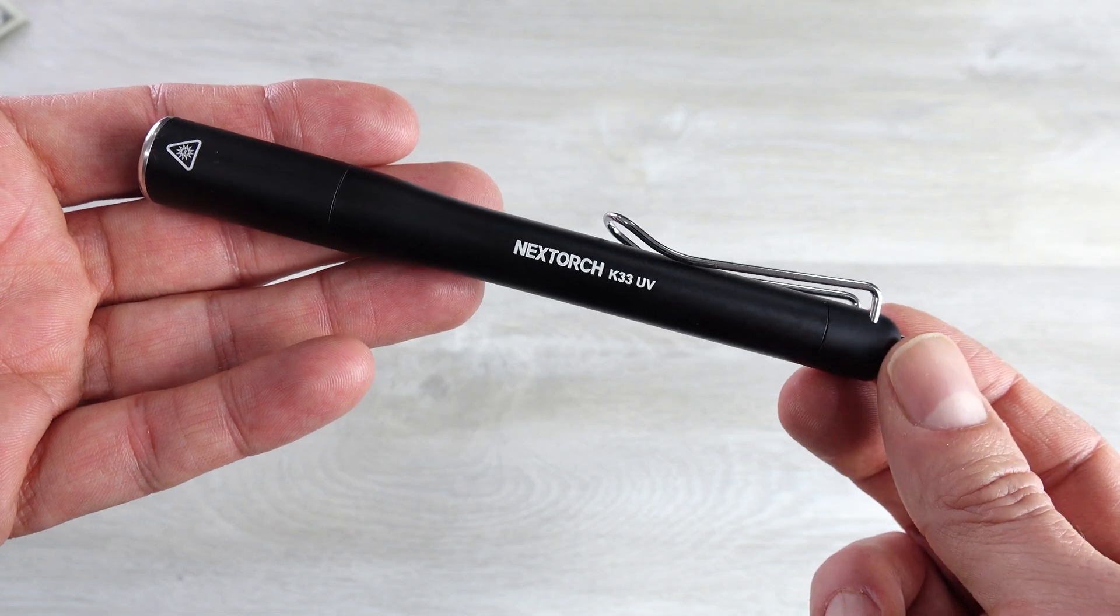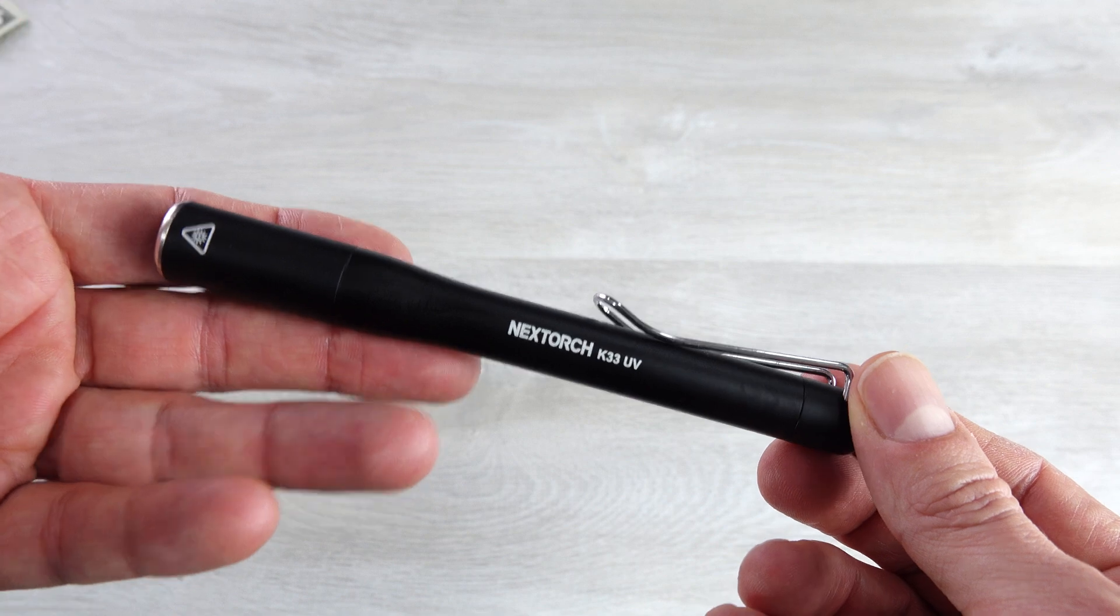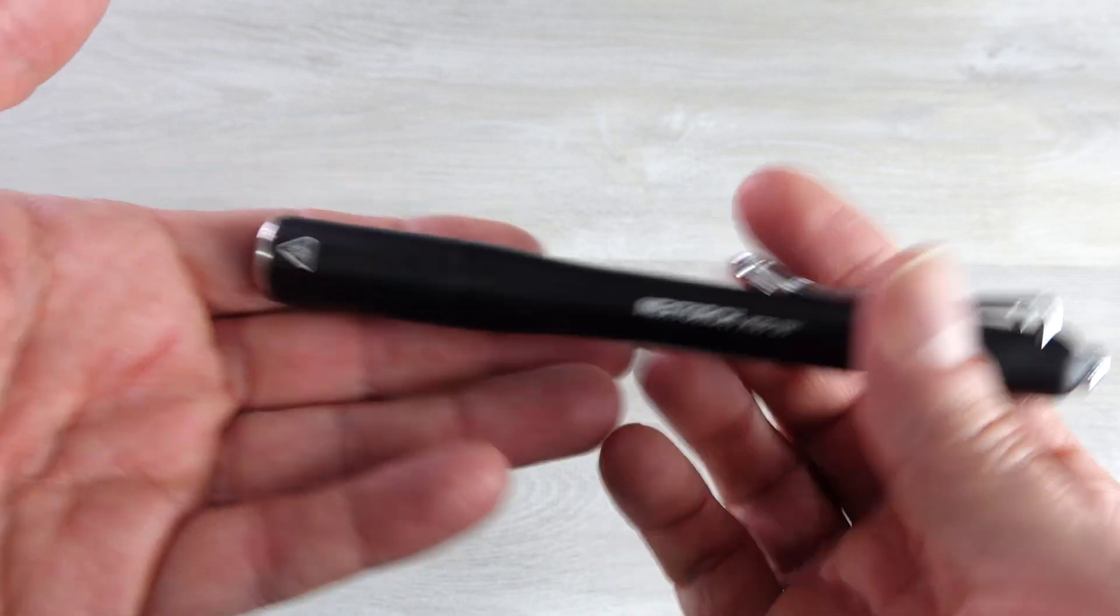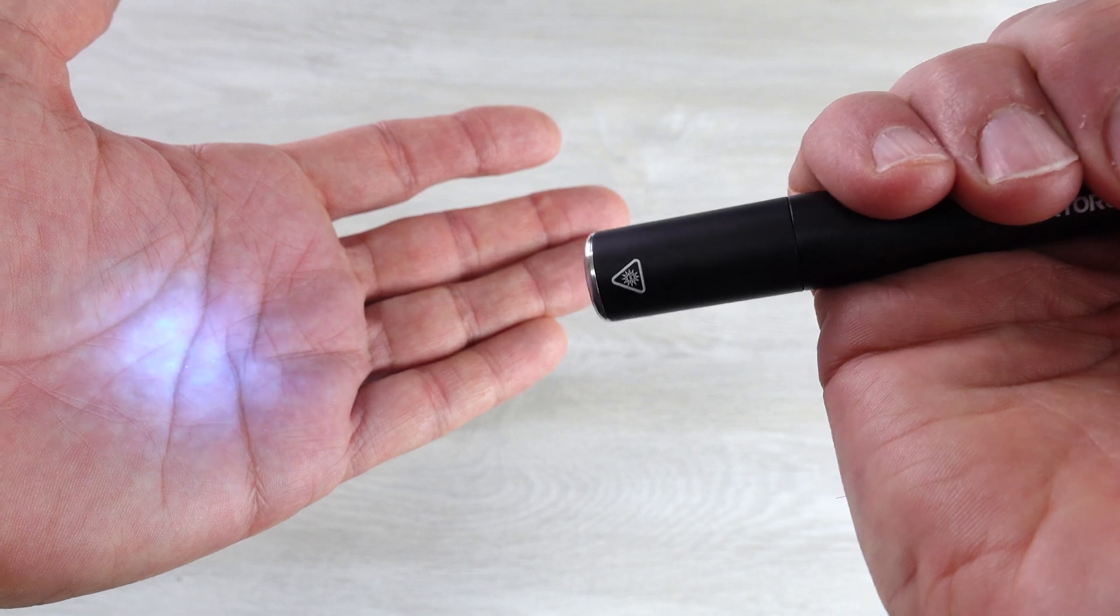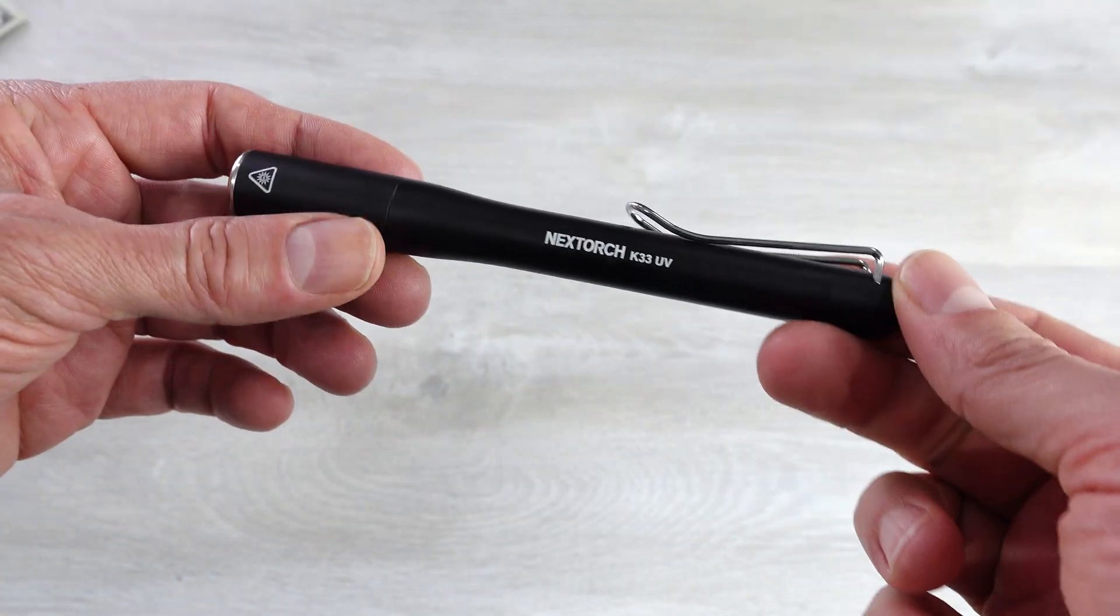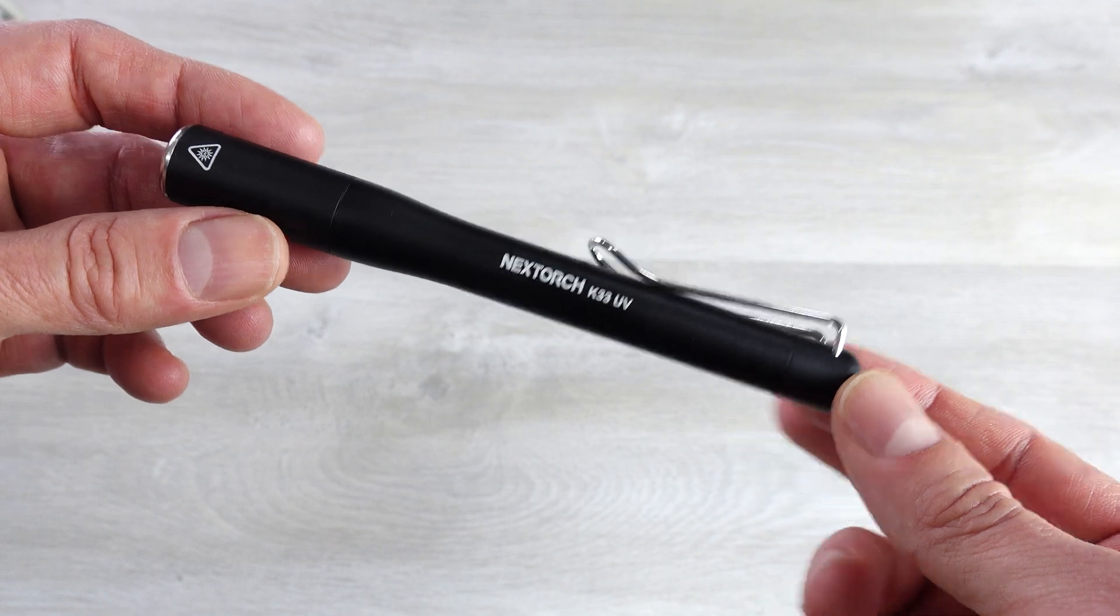Nextorch K33 UV. This review is going to be pretty straightforward and simple because this light really serves one purpose, and that is to put out a 365 nanometer UV light.